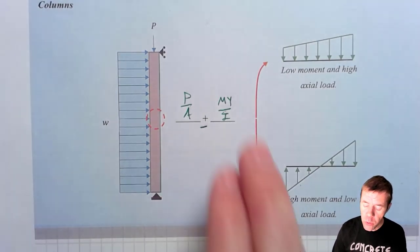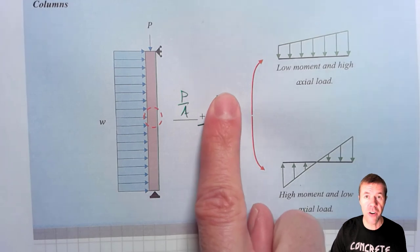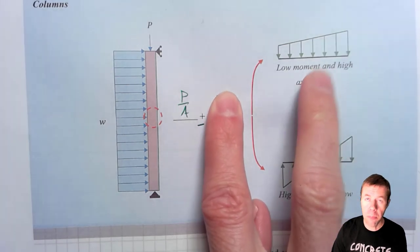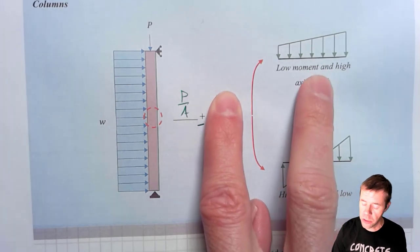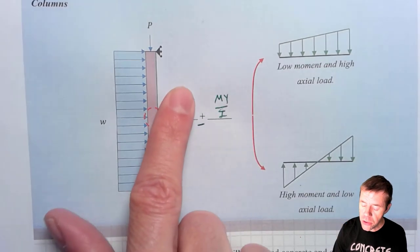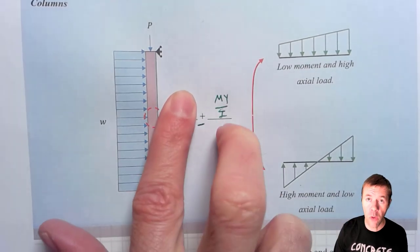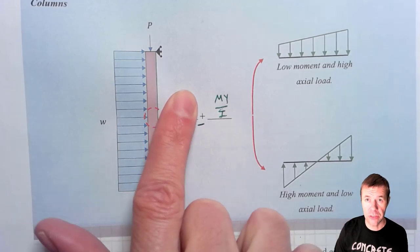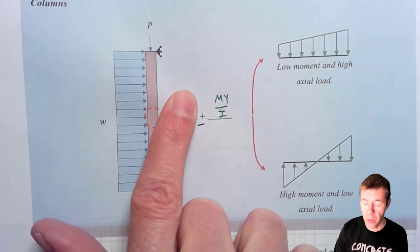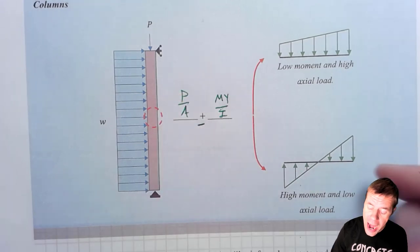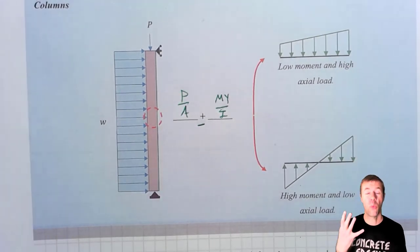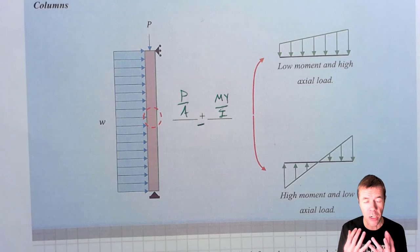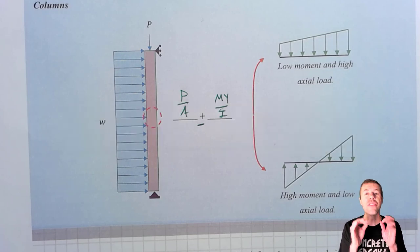Now, if I have members with very low moment, they will look more like this. The stress diagram will look more something like this. And if I have structures with very low axial load, very high moment, then they will end up looking something more like this. And then you can have any combination in between. That's where it can somewhat get overwhelming when it comes to columns. But don't worry, there's a secret weapon to help you through this.